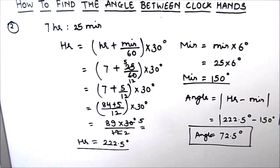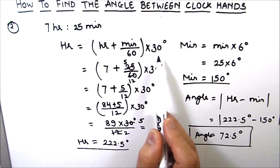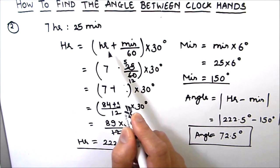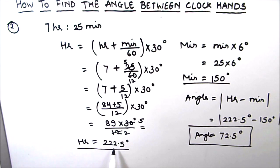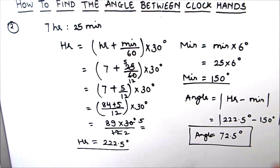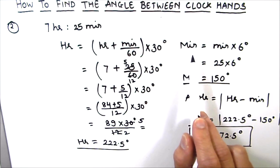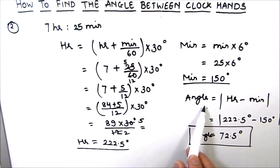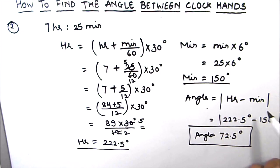Let's take a recap of the method. One rotation is 360 degrees; with 12 hours on a clock, the hour hand moves 30 degrees every hour. We find the hour angle using (hour + minute/60) × 30. For the minute hand, with 60 minutes per rotation of 360 degrees, it moves 6 degrees per minute, so the minute angle is minutes × 6. The final angle between the two hands is the absolute value of the hour angle minus the minute angle. I hope this video is helpful and you can easily find the angle between the hands of the clock. If you like the video, please hit the like button and subscribe to my channel for more math videos. Thanks for watching.